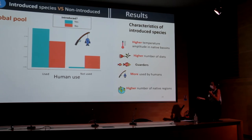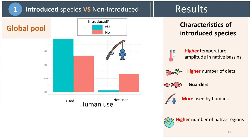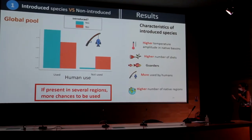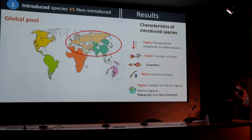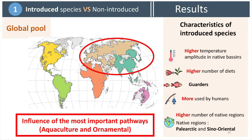Concerning human use, introduced species are more represented in the human use category and also have a higher number of native regions than non-introduced species. Species with a high number of native regions have more chances to overlap with human societies, so they have more chances to be used by humans and thus to be transported and introduced.